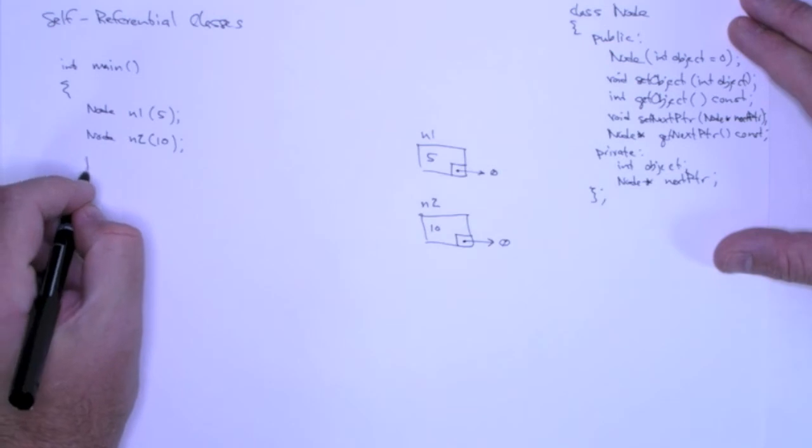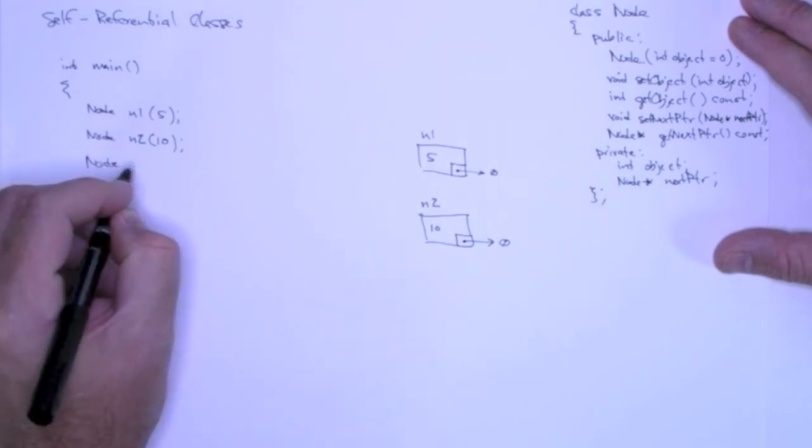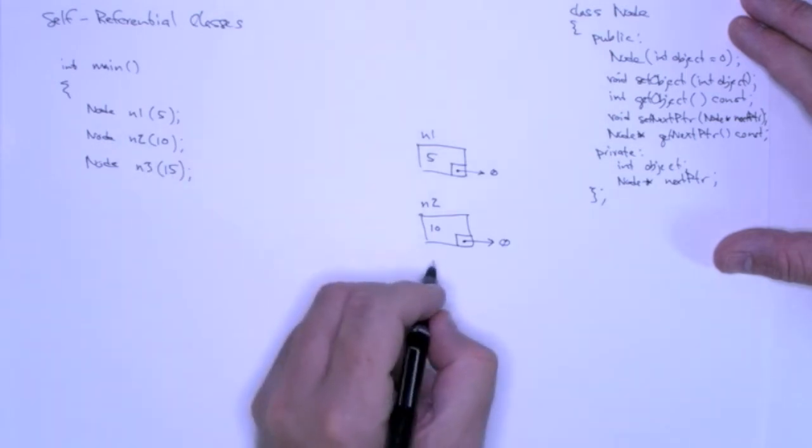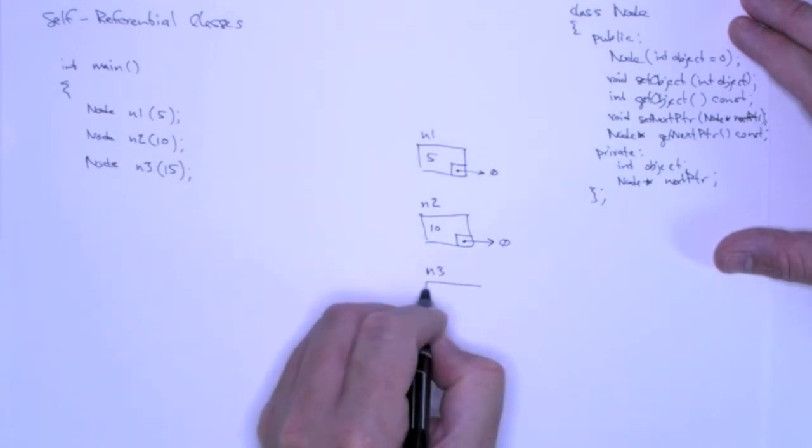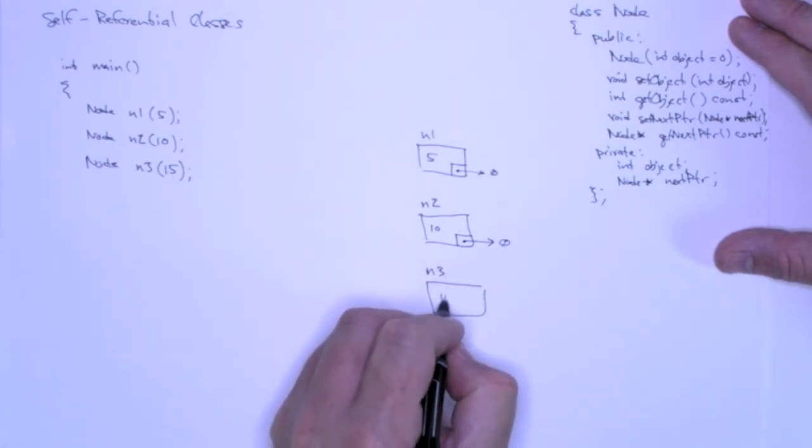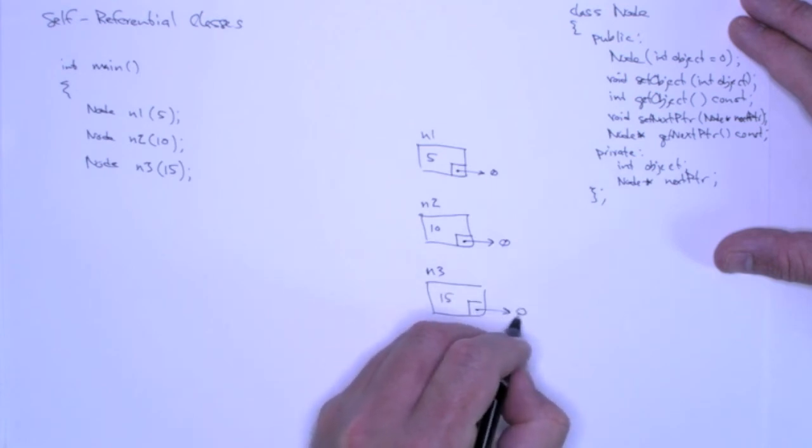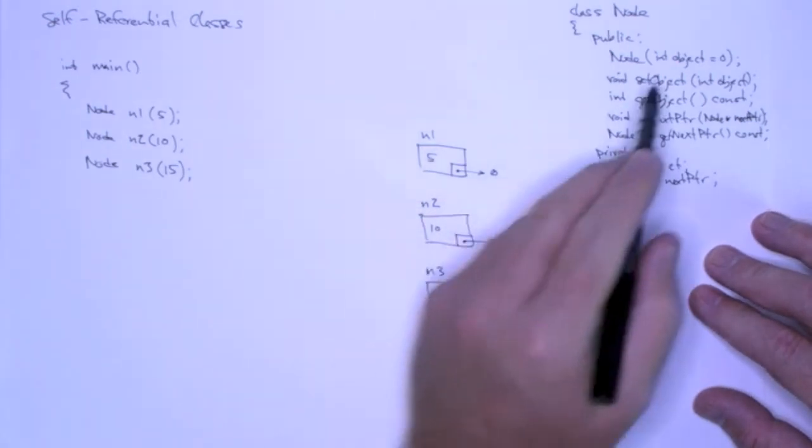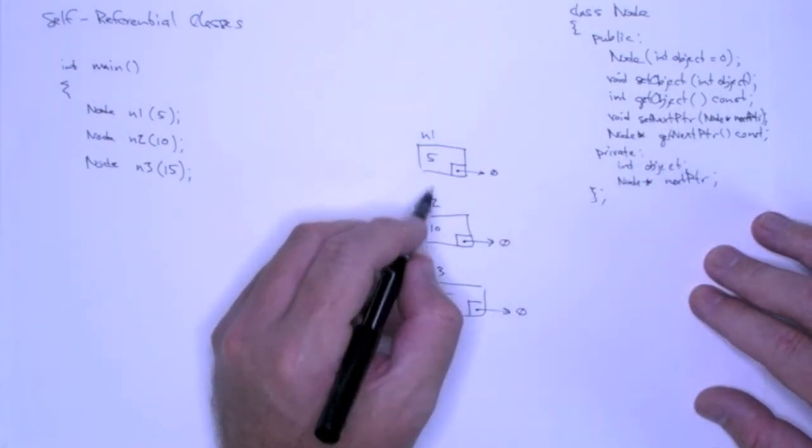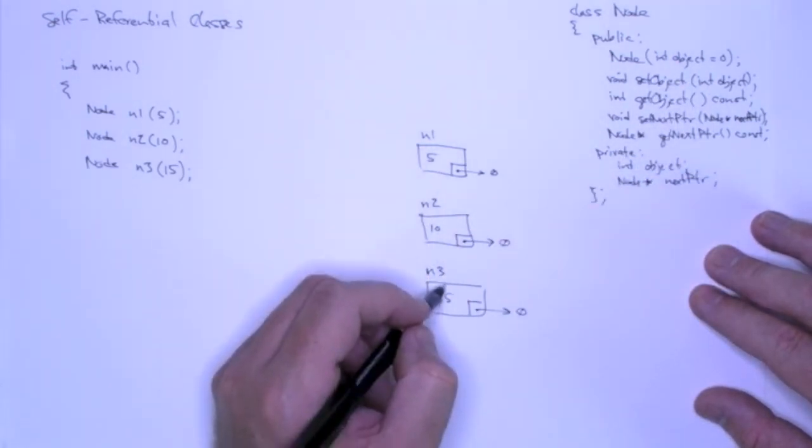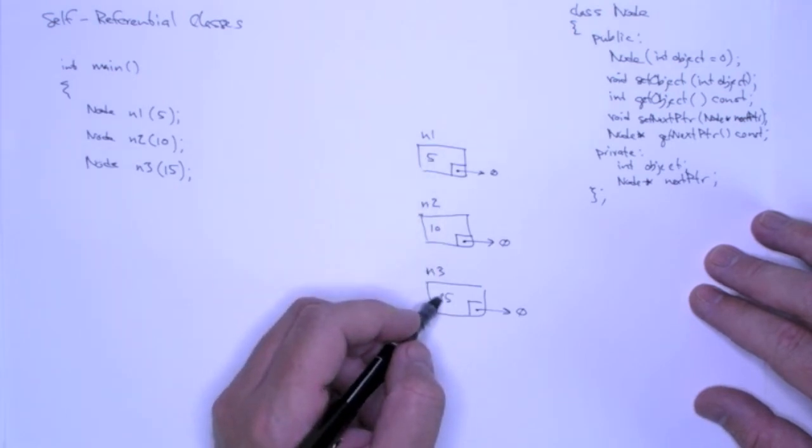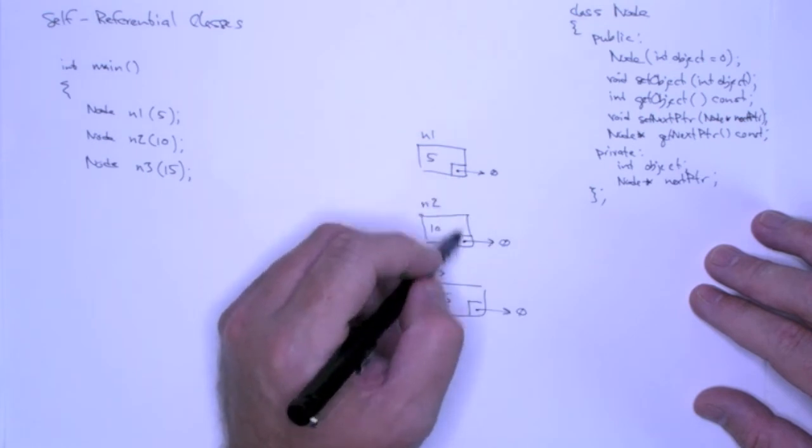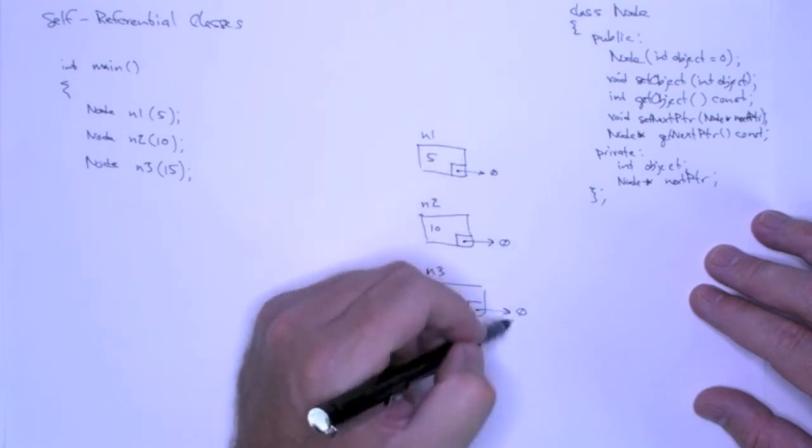And I'm going to do the same thing for n3 with 15. So n3, 15, just like that. So I have these three node objects in memory. Their constructor simply takes the parameter, assigns it to the private data member object, and then the constructor also assigns the next pointer to point to null.